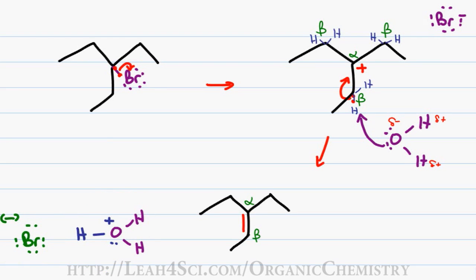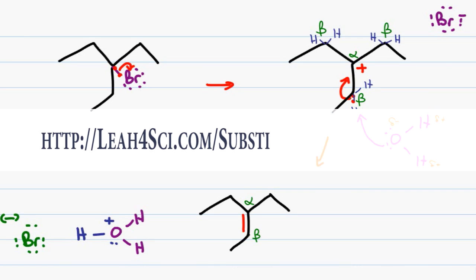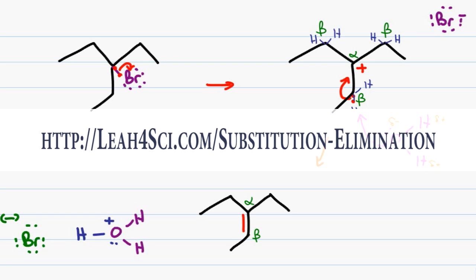Be sure to join me in part two of this series where we analyze the products of an E1 reaction based on Zaitsev's rules and the stability of substituted alkenes. You can find the entire substitution and elimination series at leah4sci.com/substitution-elimination.